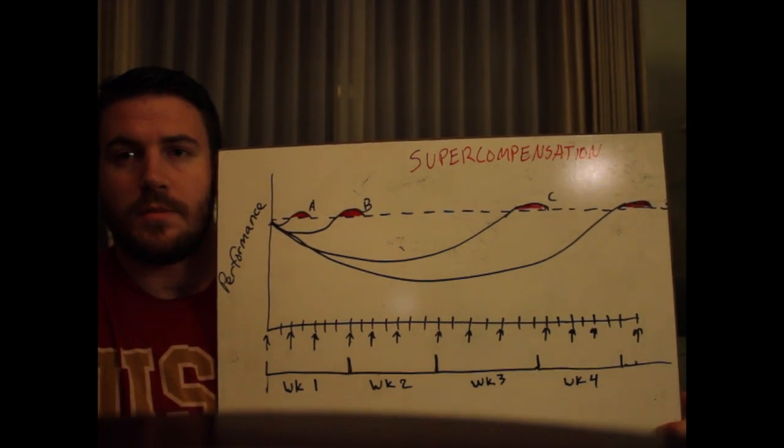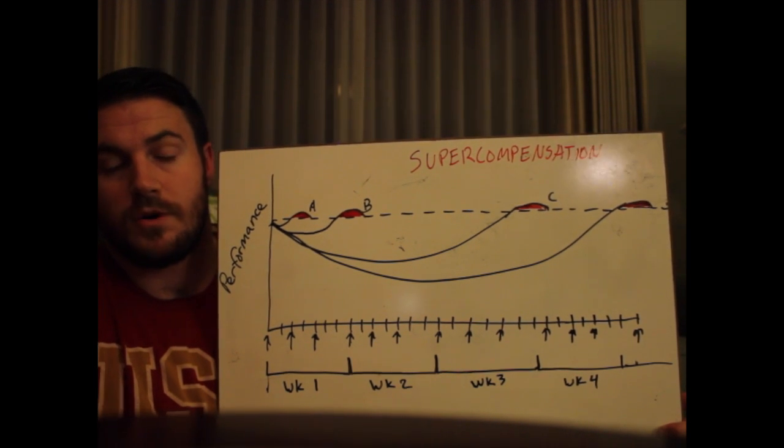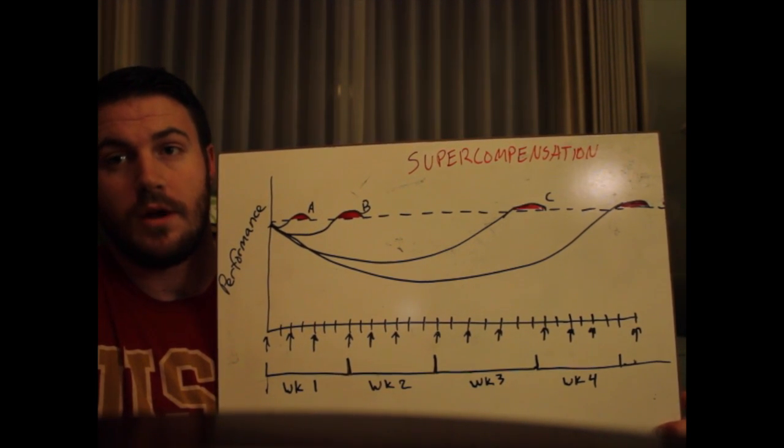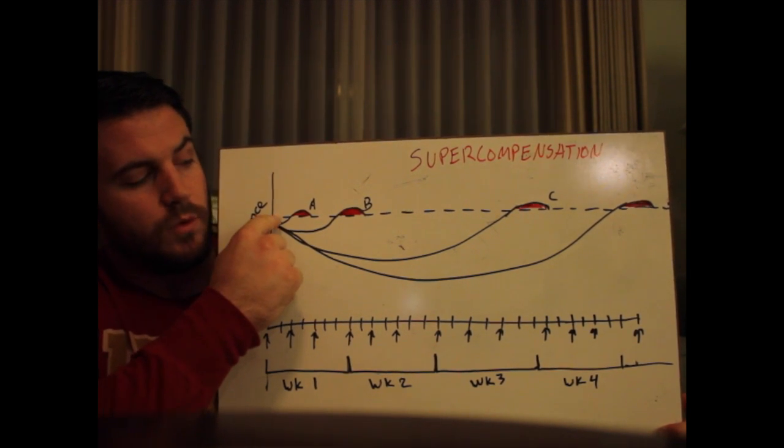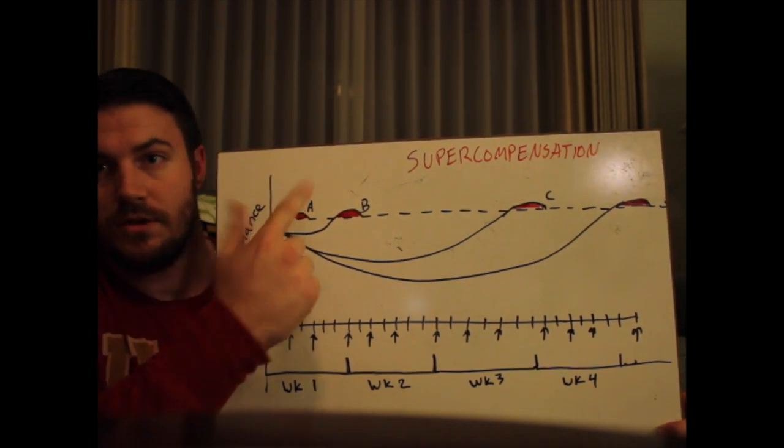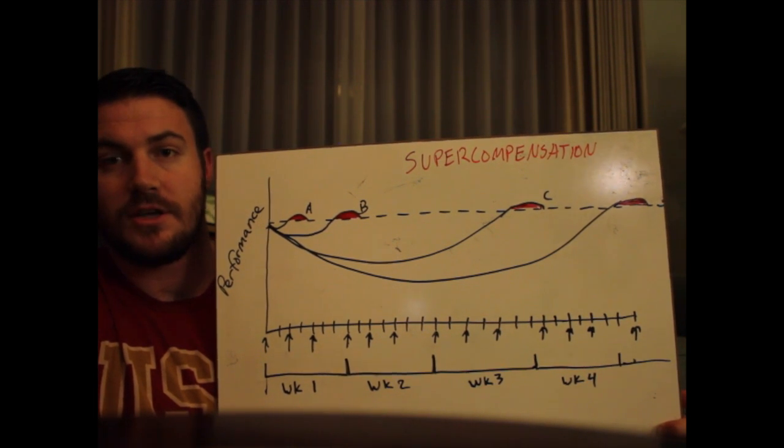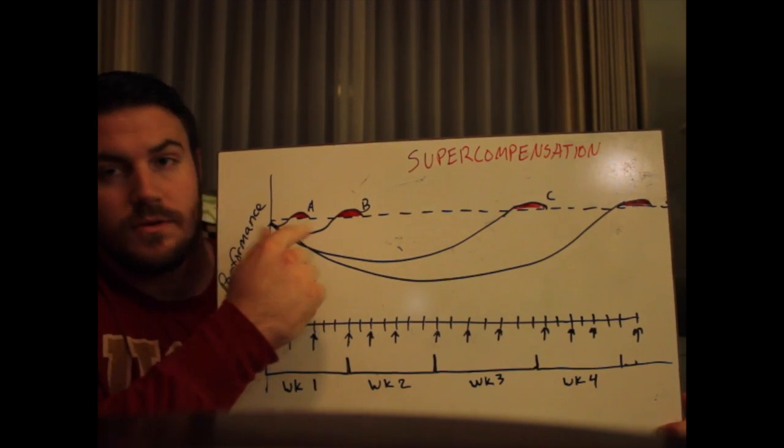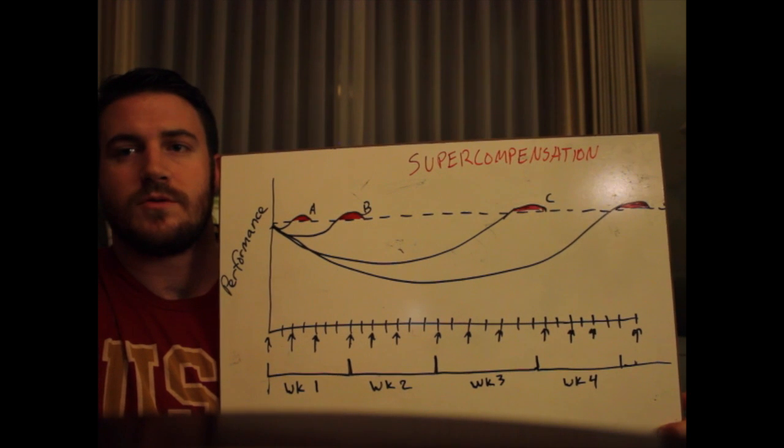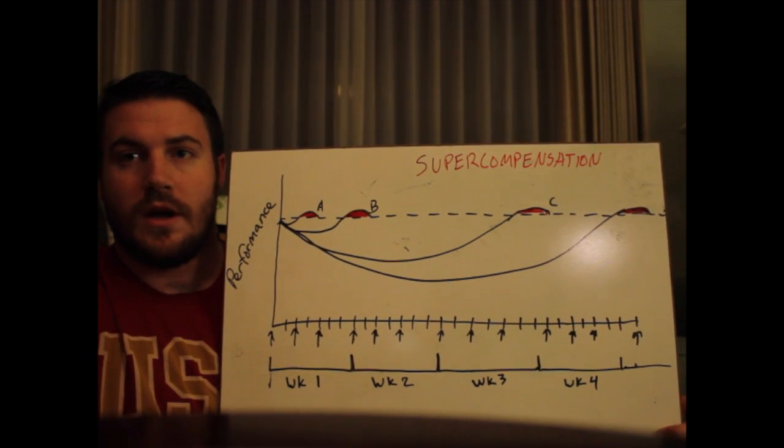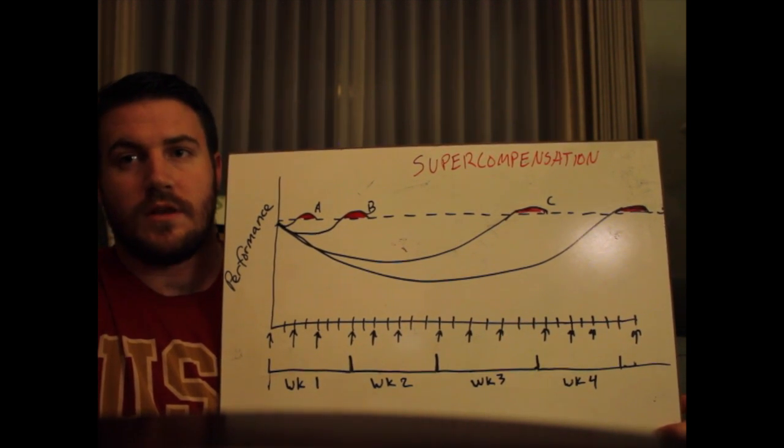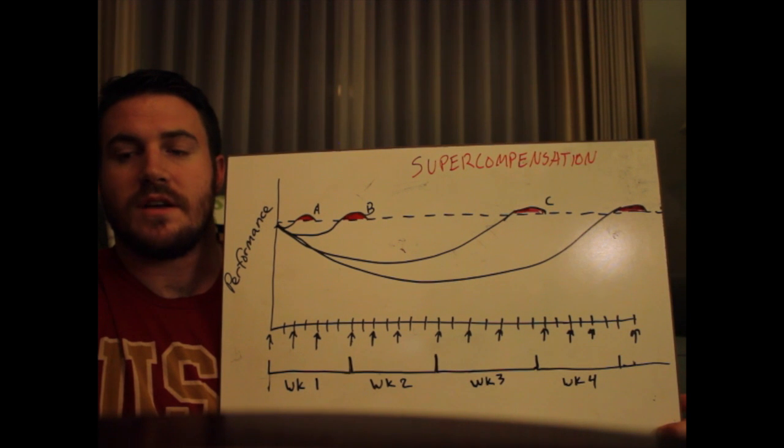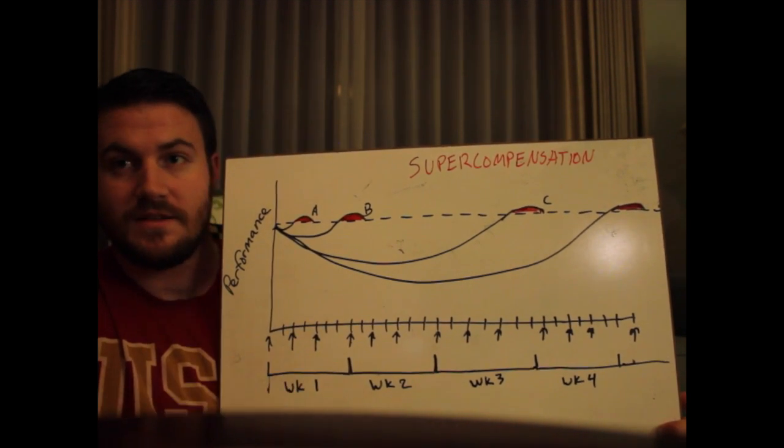Recover fully, manifest those gains—which is called supercompensation—and then display that strength by the time the next workout comes around. This will change slowly as the novice advances. It may take only 24 to 48 hours when they just start training to go through that process, but by the end it may take 72 hours.